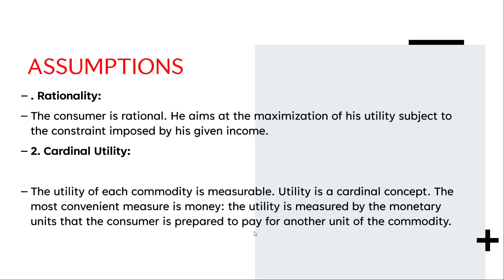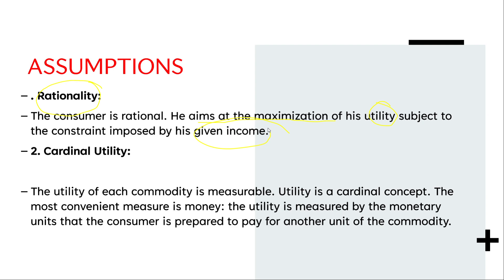The first assumption is rationality. What is rationality? A consumer is rational when he aims at maximization of his utility, subject to the constraint imposed by his given income. So, consumer rationality means utility maximization. Utility is the satisfying power of a commodity.